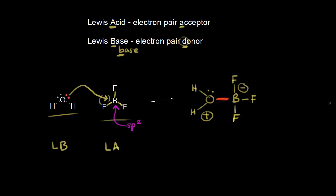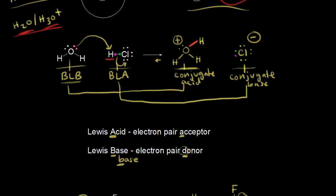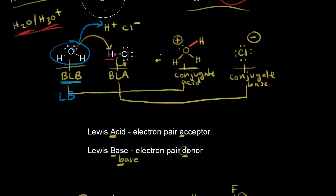The Lewis definition is more broad. Going back to the HCl reaction, water is also a Lewis base there because it's donating a pair of electrons. So we can say water is both a Brønsted-Lowry base and a Lewis base. What's accepting that pair of electrons is the proton — you can think of HCl as H+ and Cl⁻. That lone pair of electrons is being accepted by the proton, so H+ is a Lewis acid. You could say HCl is a source of a Lewis acid, which is H+. These are very important definitions to understand.